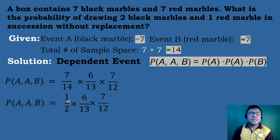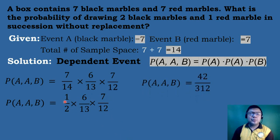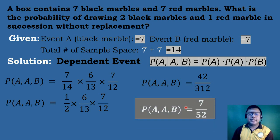Simplifying: 7 over 14 equals 1/2. So we have 1/2 times 6 over 13 times 7 over 12. Multiplying: 1 times 6 times 7 equals 42. And 2 times 13 times 12 equals 312. The lowest term of 42 over 312 is equal to 7 over 52. Therefore, the probability of drawing 2 black marbles and 1 red marble in succession without replacement is equal to 7 over 52.